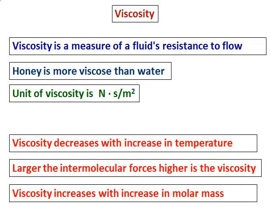Maple syrup is also more viscous. The unit of viscosity is newtons per second per meter squared. Viscosity decreases with increase in temperature. Larger the intermolecular forces, higher is the viscosity. Viscosity increases with increase in molar mass also. Quite obvious, heavier compounds will move slowly.